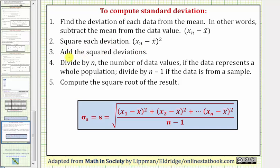Step four, we'll divide by n, the number of data values if the data represents the whole population, and we divide by n minus one if the data is a sample. Because we're asked to find the sample standard deviation, we'll be dividing by n minus one shown in the formula here below. And then finally we compute the square root of the result which gives us the standard deviation.